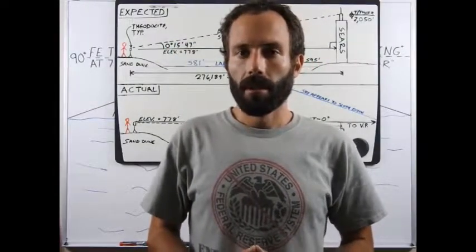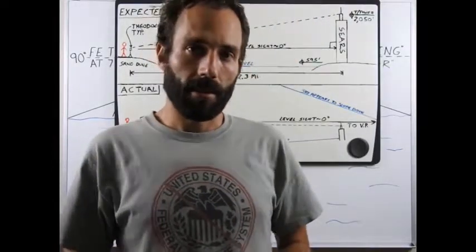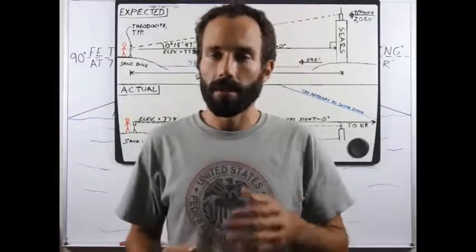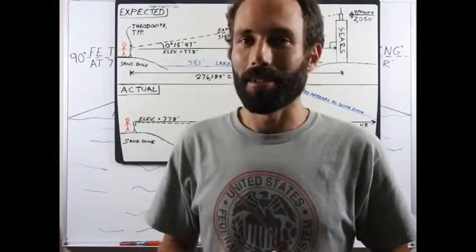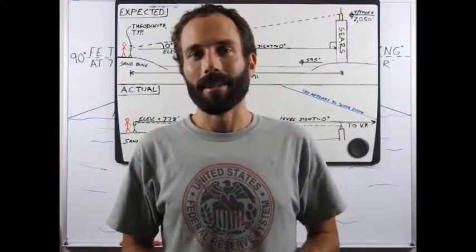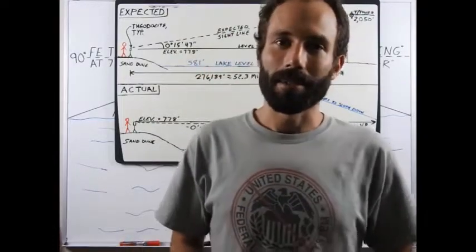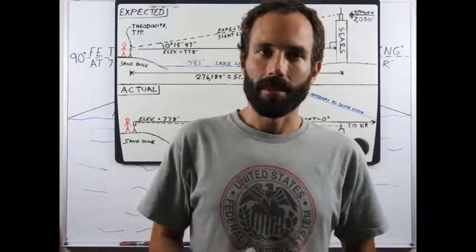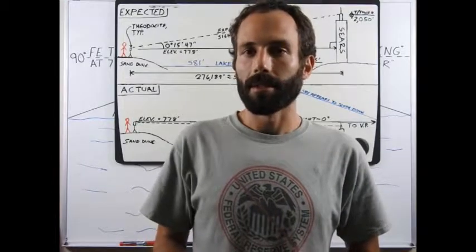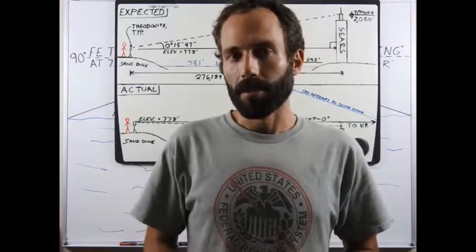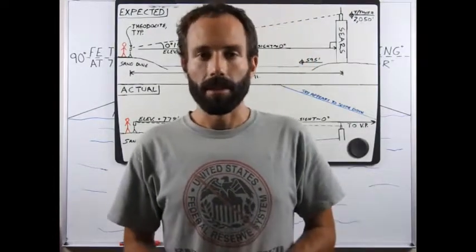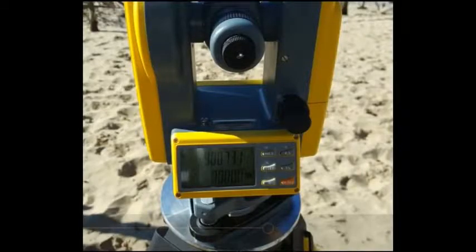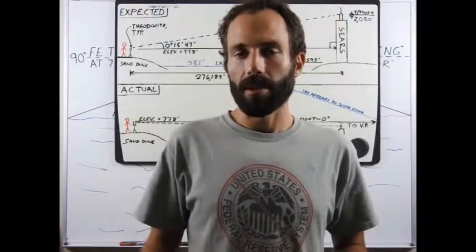A few days ago I was sent a message by someone who has been questioning the heliocentric globe model — what I like to call a closet flat earth researcher. He's got a technical background and nobody else to talk to about this because it's taboo to question our world. He sent me a video by a YouTube researcher named Red Pill World, who has been using a theodolite — a surveying instrument — to measure angles over long distances and compare them to what you'd expect on a spherical earth versus a flat earth.